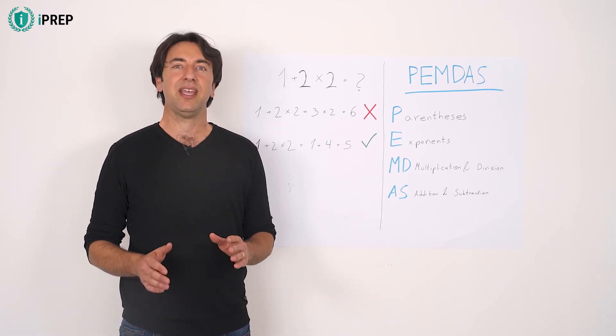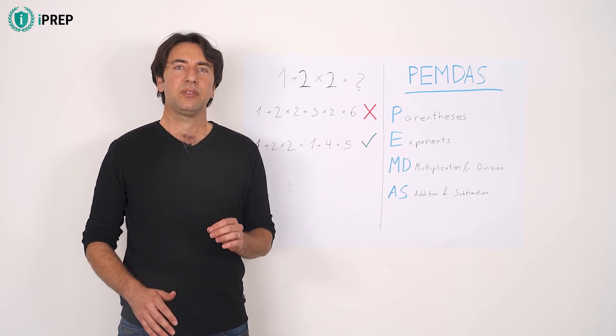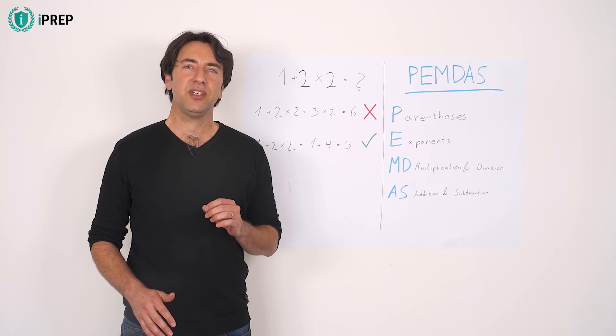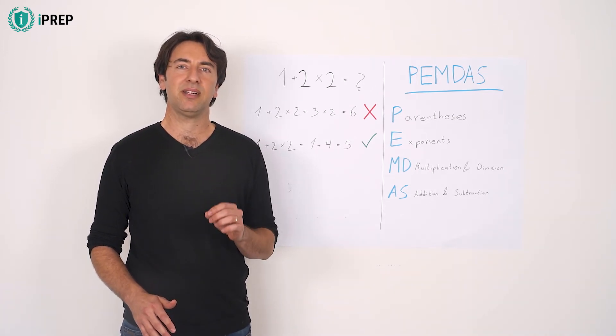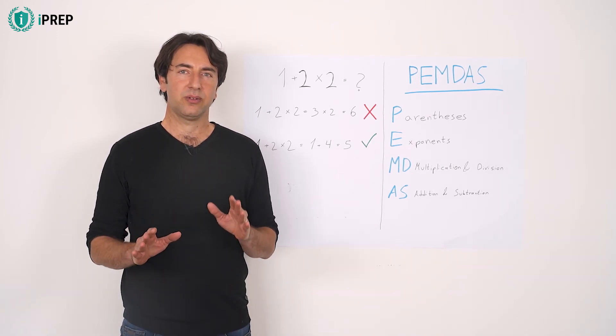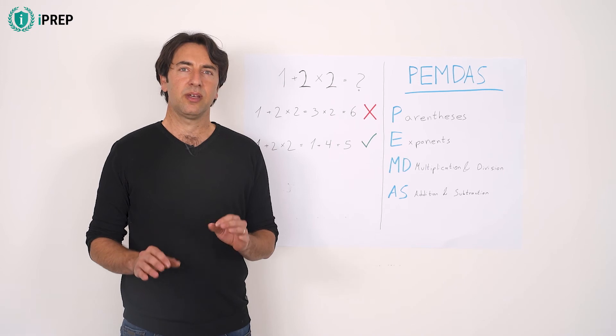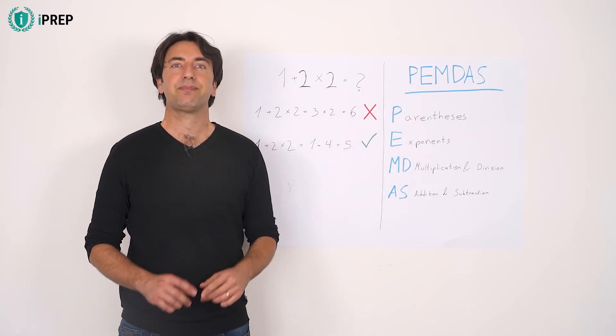The order of operations is a set of conventions that became a practical rule in the 1960s. This rule determines which mathematical operation to perform first in order to evaluate a given mathematical expression. To remember this order, remember the common acronym PEMDAS.